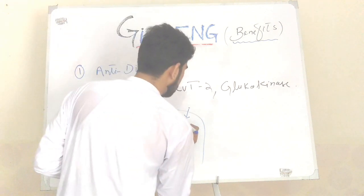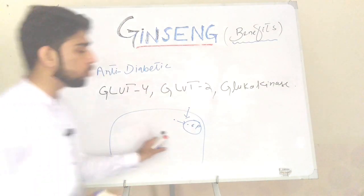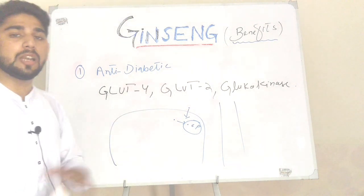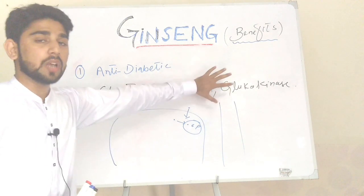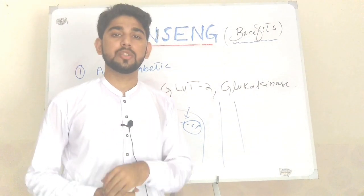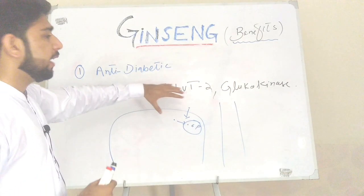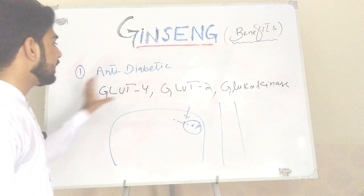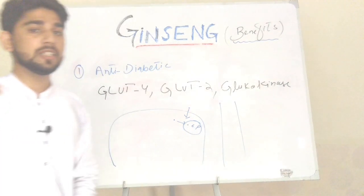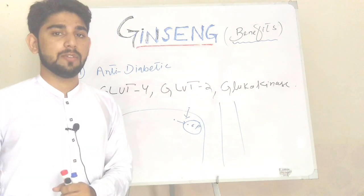Glucokinase is present in liver cells, while in other cells the hexokinase enzyme is used for phosphorylation of glucose. Ginseng activates PPAR gamma, and PPAR gamma increases the expression of GLUT4, GLUT2, and glucokinase, and also increases insulin sensitivity, ultimately leading to a reduction of blood glucose level.